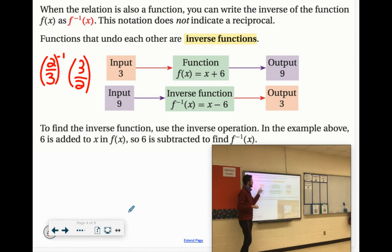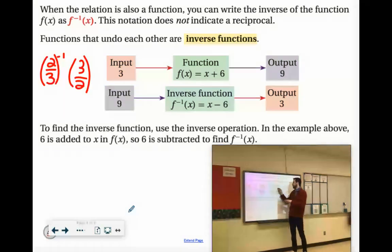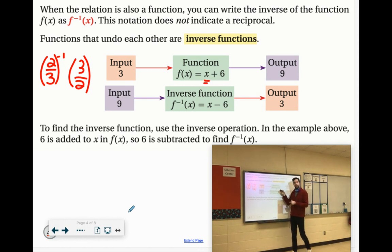Think of if you had 3 and you put it in the function f(x) equals x plus 6. If you put in 3 right there, 3 plus 6 is 9. So the inverse function would be, well, how could you go from 9 to 3 then? And the inverse would be minus 6.